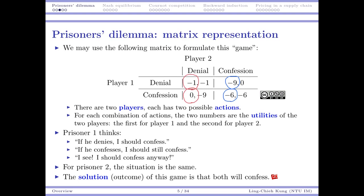For player two, it's the same thing, and we can show directly that both of them will choose confession. Because for both of them, confession is a dominant strategy. So we can predict the result: both will choose confession and be put in jail for six months. We call this the solution of this game.